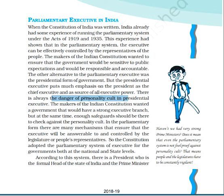In the parliamentary form, there are mechanisms that ensure the executive will be answerable to and controlled by the legislature or people's representatives. That is why the constitution adopted the parliamentary system of executive for the government, both at the national level and at the state level. To prevent personality cult, India adopted the parliamentary form of executive.